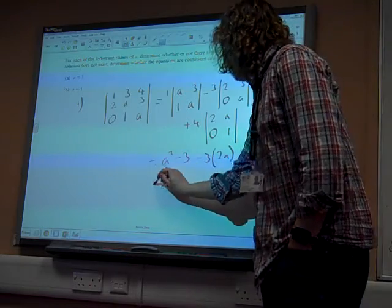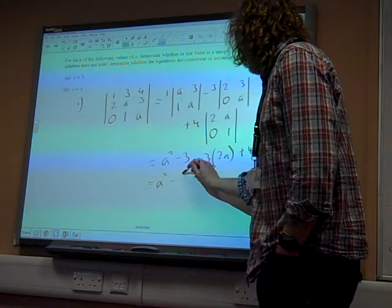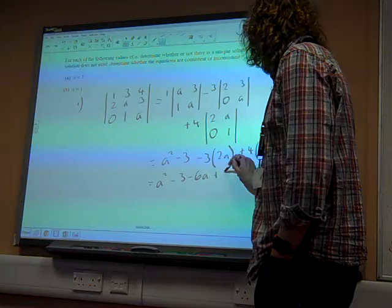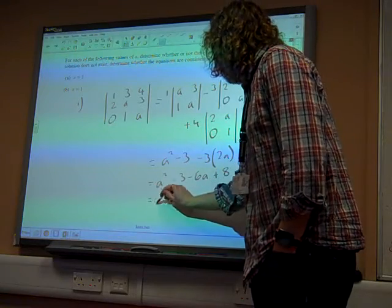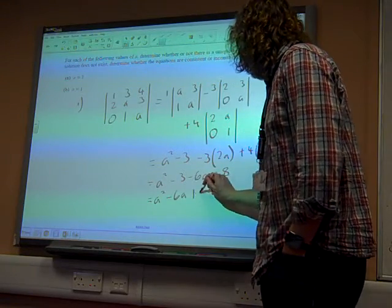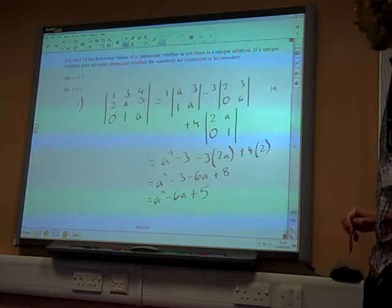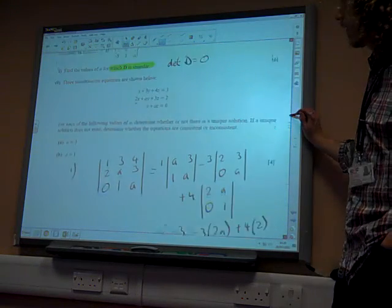So I've got A squared minus 3, minus 6A, plus 8, or A squared minus 6A plus 5. That's my value. Now, that's my value of the determinant.